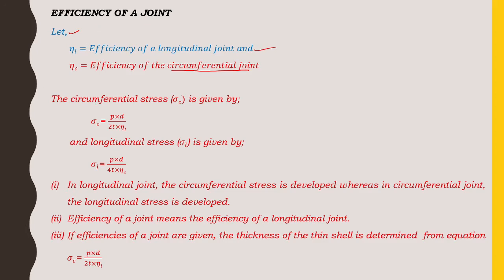The circumferential stress σc is given by: σc = p·d / (2·t·ηl), where ηl is the longitudinal efficiency. Similarly, the longitudinal stress σl is given by: σl = p·d / (4·ηc), where ηc is the circumferential efficiency.